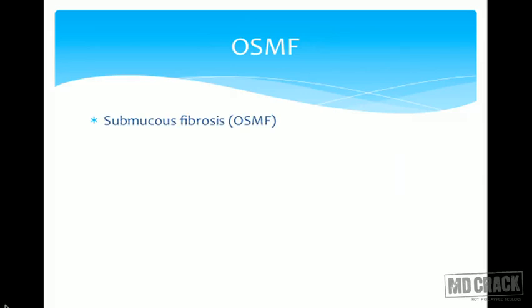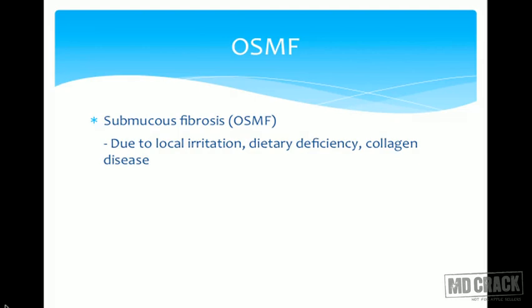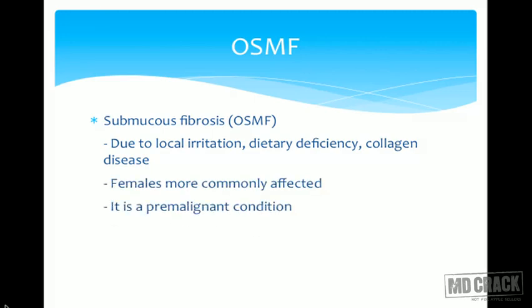Oral submucous fibrosis (OSMF) is due to local irritation, dietary deficiency, and collagen disorder. Females are commonly affected and it is a pre-malignant condition. In this case, trismus is seen — meaning difficulty in opening the mouth.